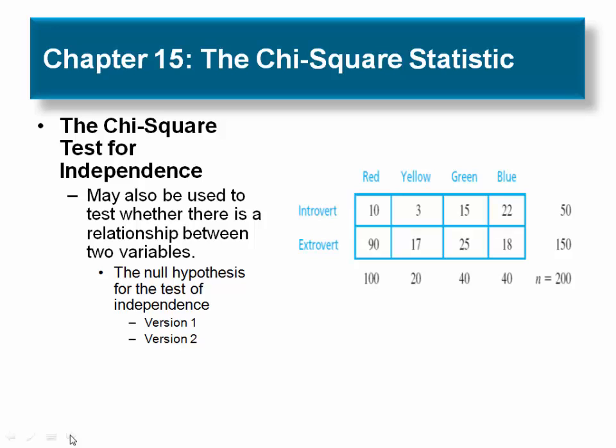There are two versions of how one might interpret the outcome of the chi-square test statistic. Version 1: In this version, the data are viewed as a single sample with each individual measured on two variables, and the goal is to evaluate the relationship between the two variables. For example, the goal is to determine whether there is a consistent, predictable relationship between personality and color preference. That is, if I know your personality, will it help me to predict your color preference?